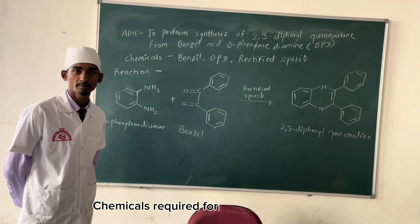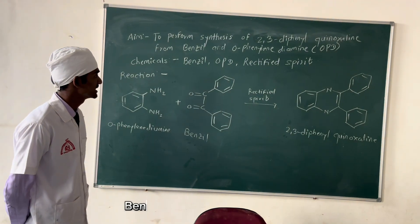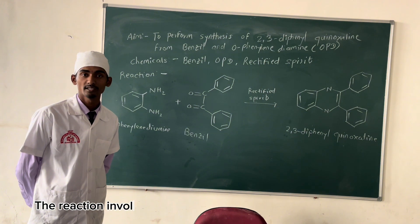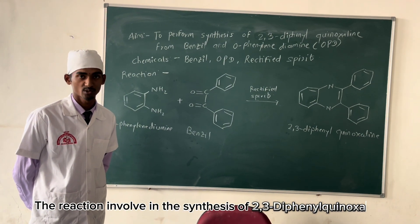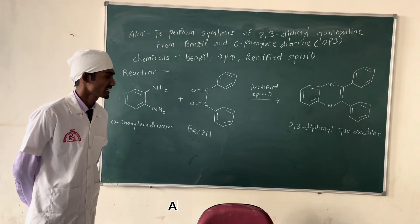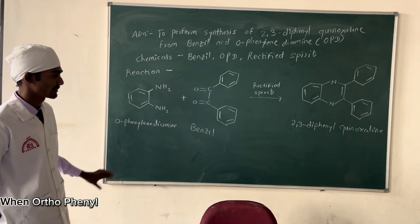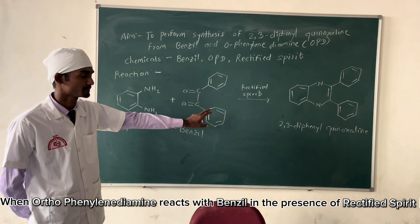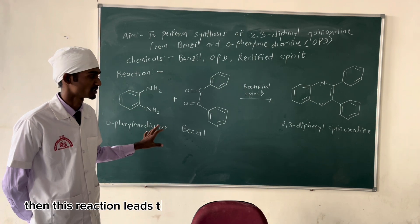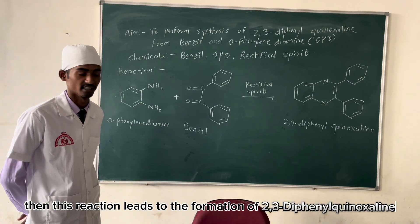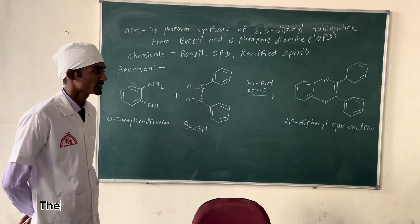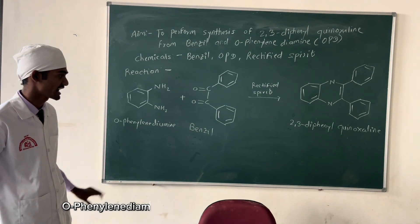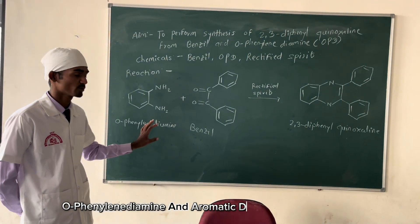The chemicals required for this experiment are benzil, OPD, and rectified spirit. The reaction is known as the synthesis of 2,3-diaphylene quinoxaline. As you can see, when orthophenyl diamine reacts with benzil in the presence of rectified spirit, this reaction leads to the formation of 2,3-diaphylene quinoxaline.